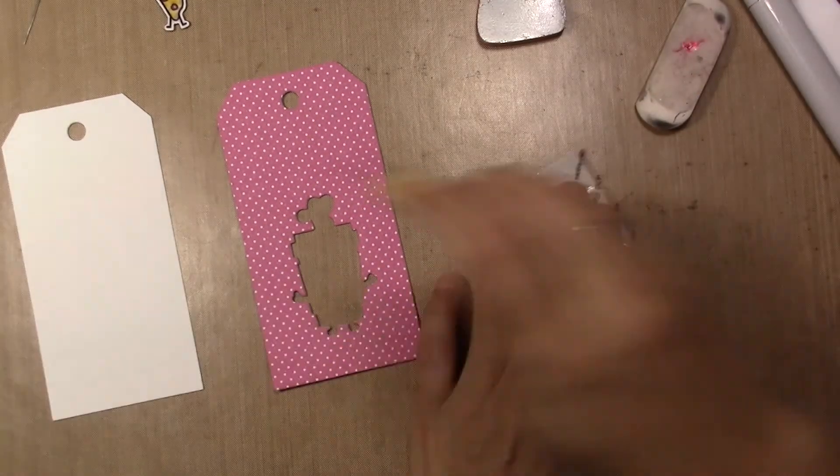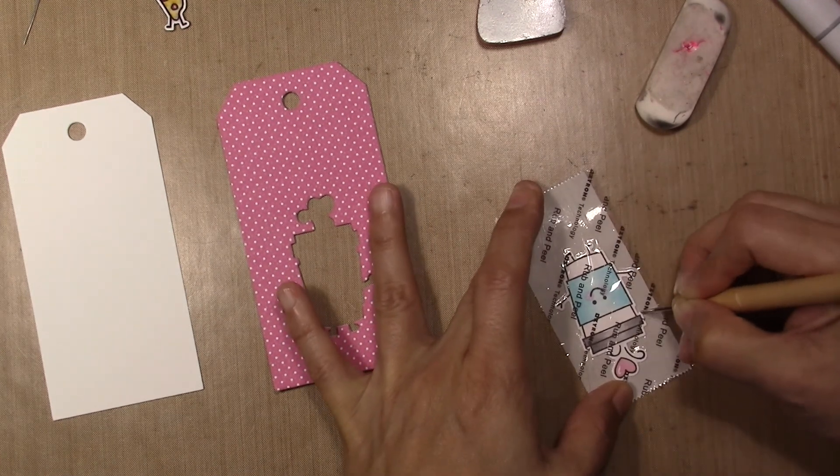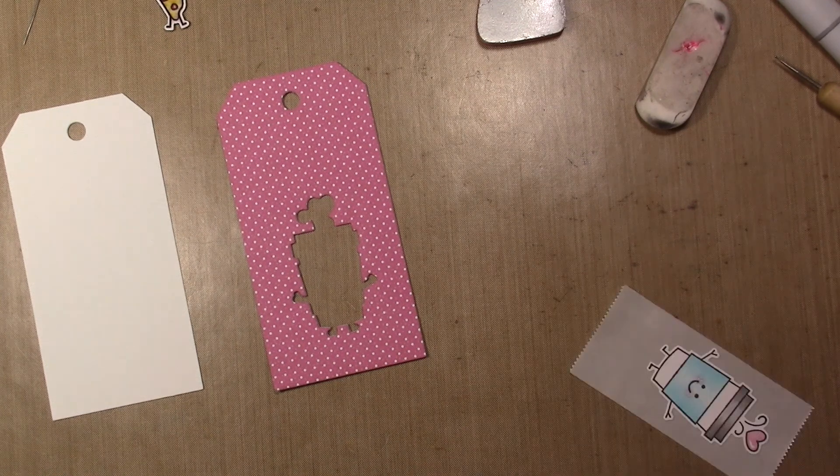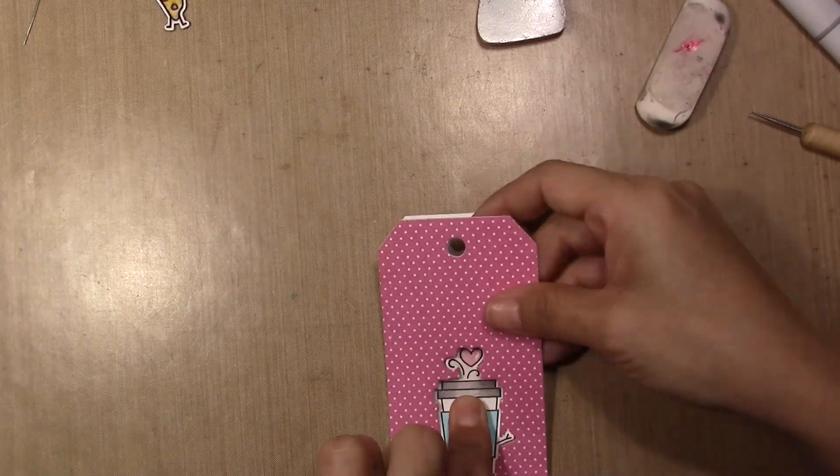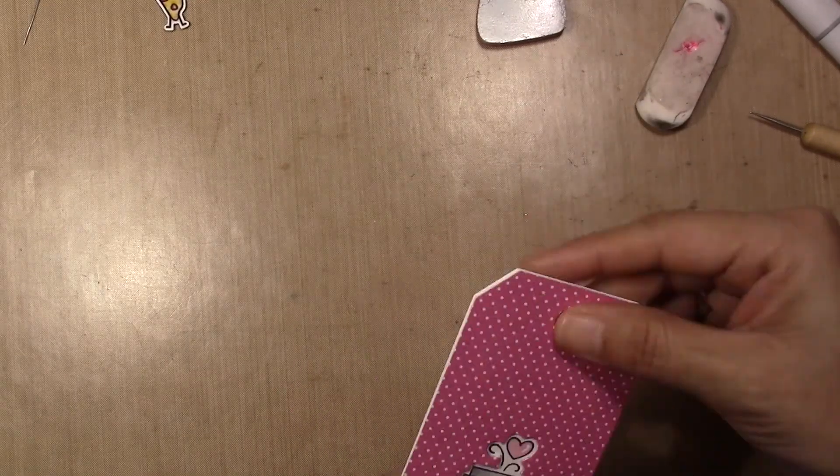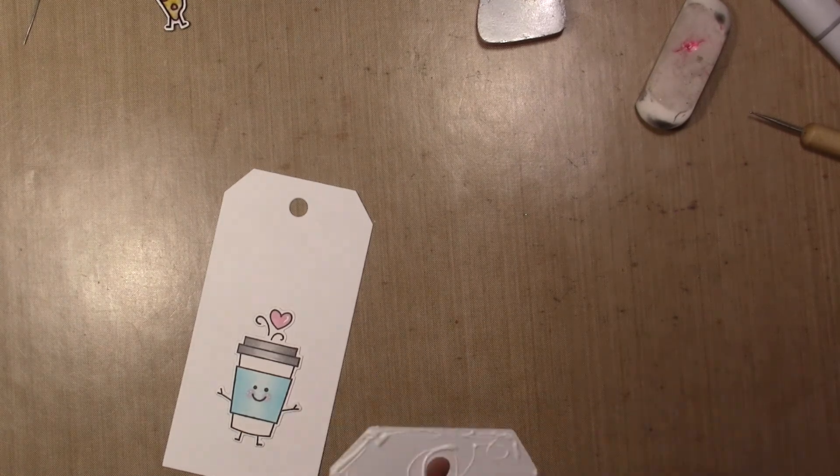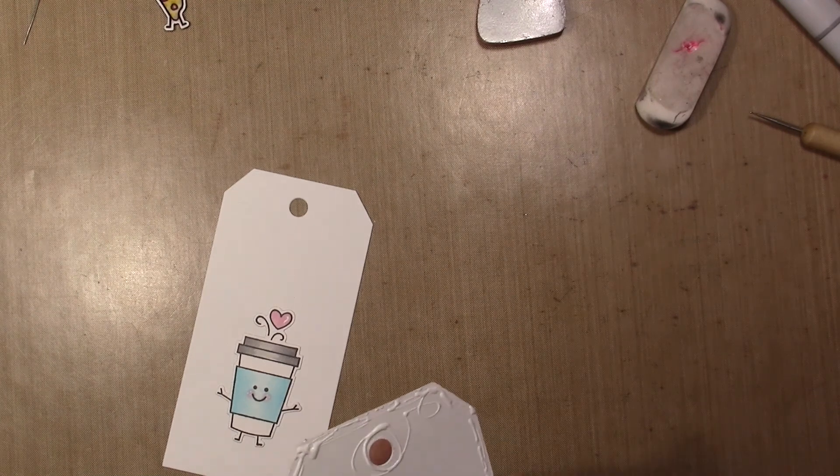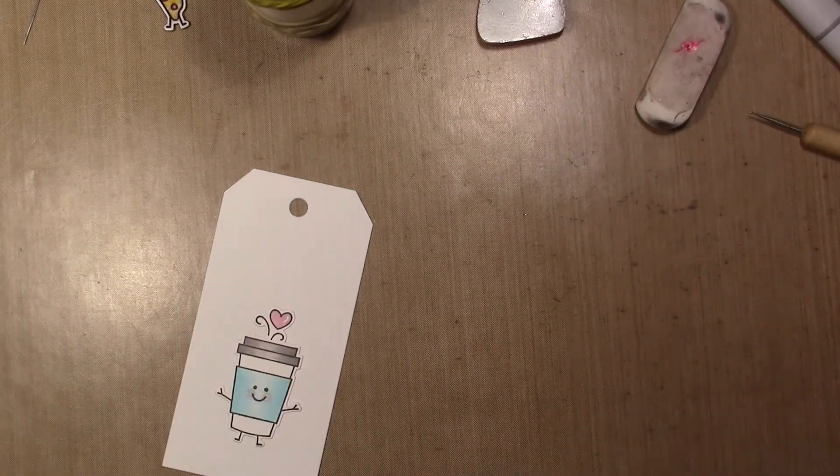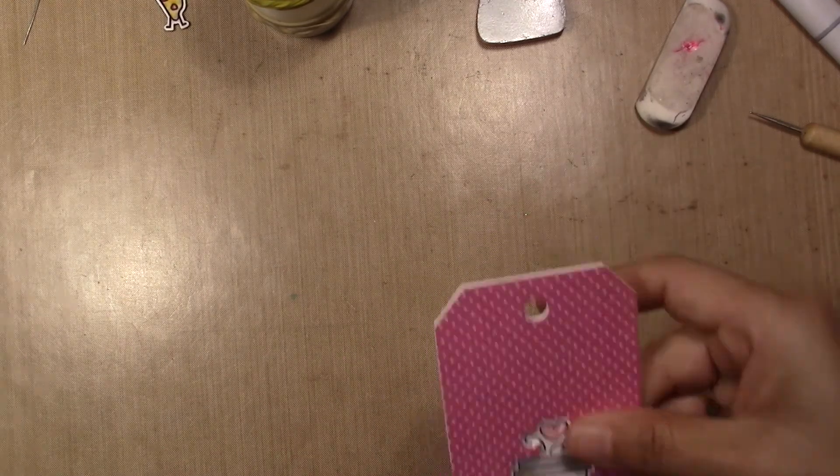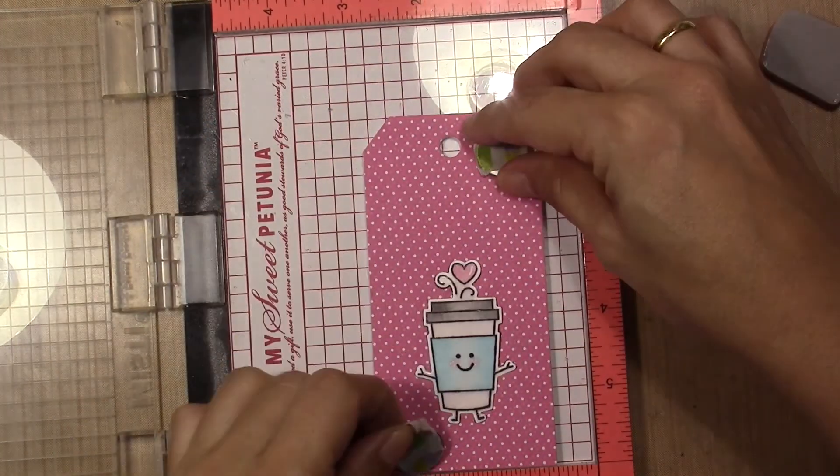Before gluing the tag that is going to be in the bottom, I'm going to glue first with my sticker maker the image that is going to be in the bottom tag. I measure with the top tag that has the hole and I glue it down and after that I can glue my tag that has the pattern paper. And also I place the magnet inside already.